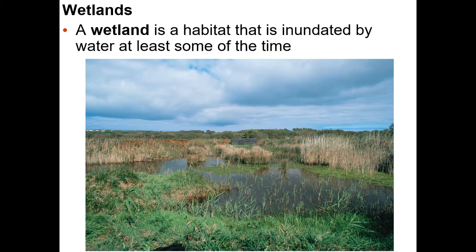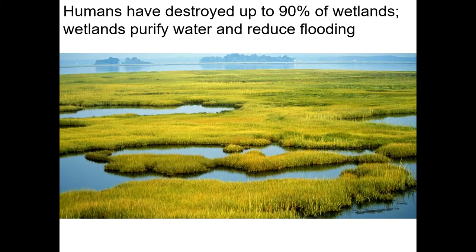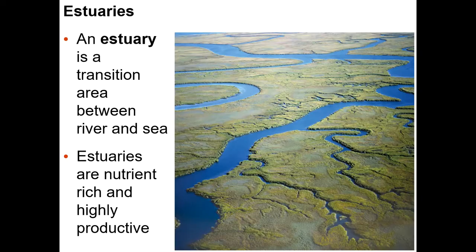A wetland is a habitat with standing water for at least some of the time. We've destroyed many wetlands to build houses and other structures, which is a problem because wetlands are very good at reducing flooding — they slow down water moving over land and help purify water as it moves through the system.